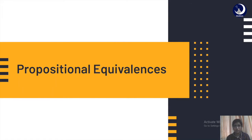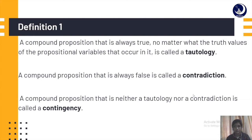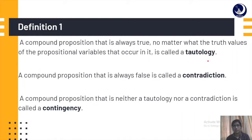The first definition is: a compound proposition that is always true, no matter what the truth values of the propositional variables that occur in it, is called a tautology. A compound proposition that is always false is called a contradiction.